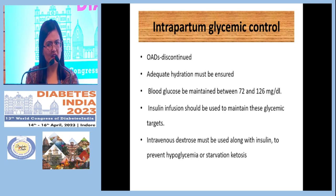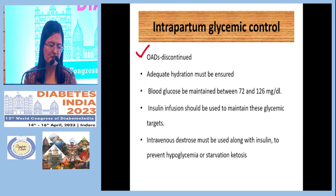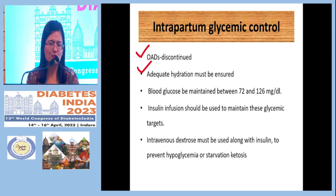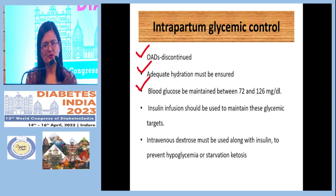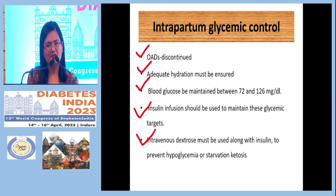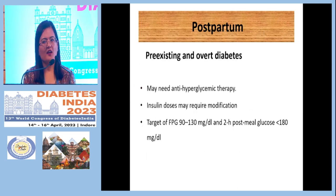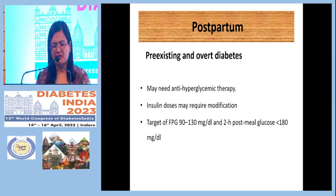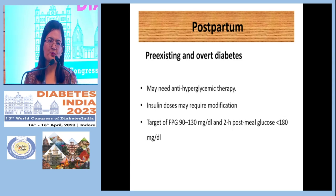For intrapartum glycemic control, oral anti-diabetics should be discontinued and adequate hydration maintained. Blood glucose should be kept between 72 to 126 mg/dL. Insulin infusion should be used if required, and IV dextrose with insulin can be given to avoid hypoglycemia or starvation ketosis.